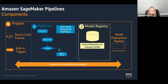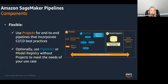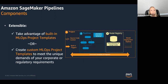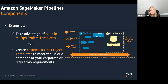You can use Projects for end-to-end pipelines, but you can optionally use those different components individually as well — you can use Pipelines or Model Registry without Projects if you want. And in terms of extensibility, you can take advantage of built-in MLOps project templates or you can create your own custom MLOps project templates to standardize and create repeatability in how your machine learning pipelines are developed.